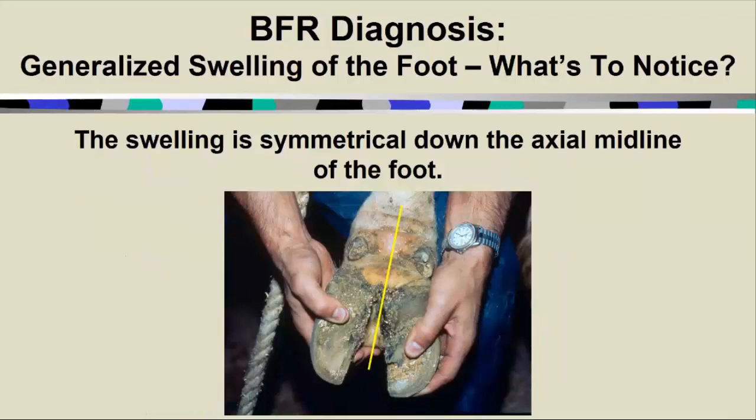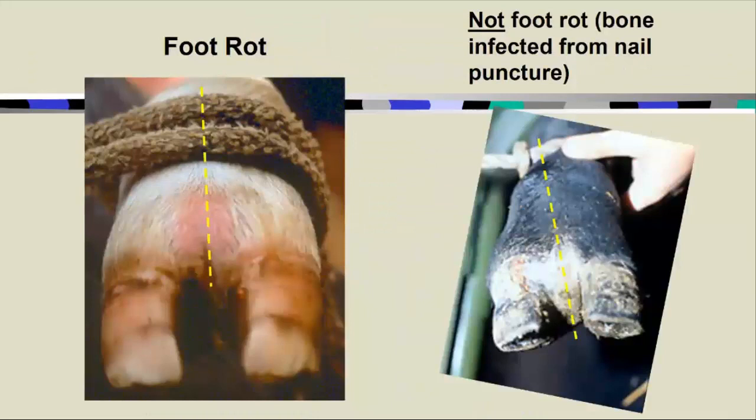In this slide you can see on the left, if we draw that imaginary line down the middle, there's obvious swelling and you can make out a hint of a cleft and fissure formation between those digits — a fairly symmetrically swollen foot. When viewed from behind, the dewclaws on this limb would be spread further apart than on other limbs. The other case on the right shows an asymmetrically swollen foot — that is not characteristic of foot rot. This is actually an animal that stepped on a nail and got a puncture wound that went all the way down to the digital bone.